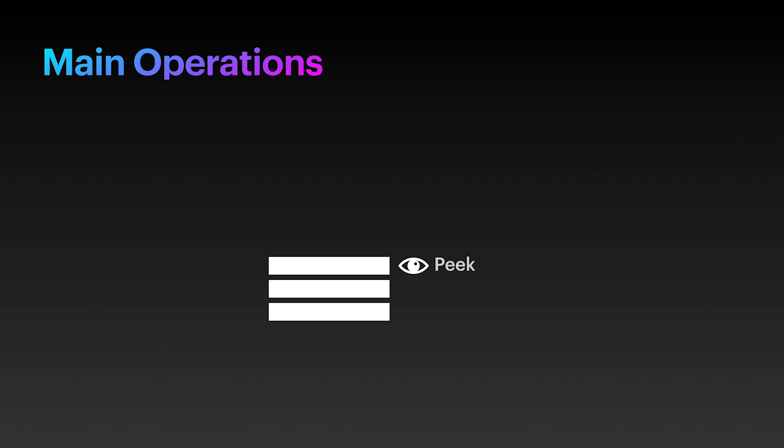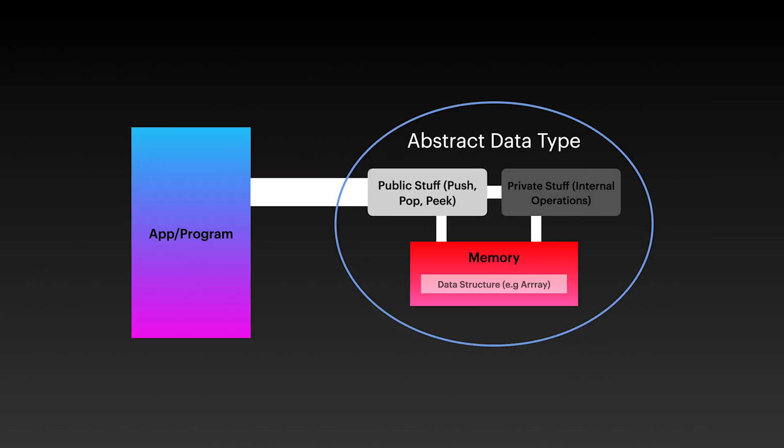The stack data structure is also considered to be an abstract data type, which means that it is defined by these operations and values at a high level rather than in memory itself.